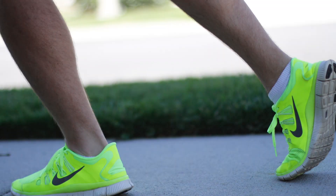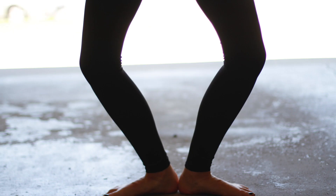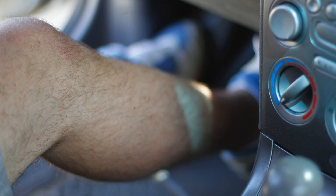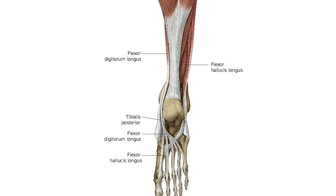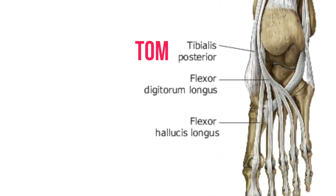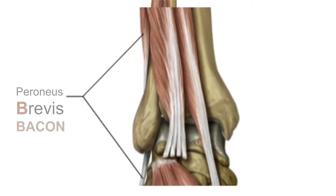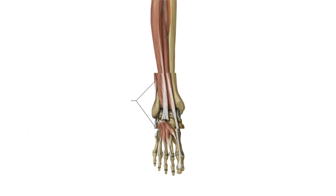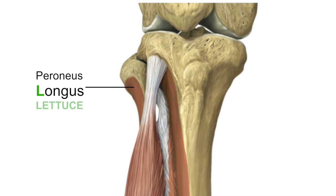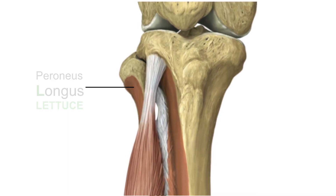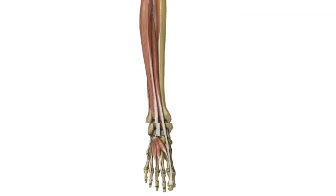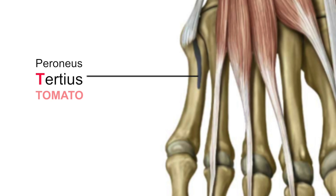Please note the incredible role of the lower leg and foot in facilitating human behaviors. The tibialis posterior is Tom. The flexor digitorum longus is Dick. The flexor hallucis longus is Harry, or Hal. Peroneus brevis is our B for bacon. Peroneus longus is our L for lettuce. Peroneus tertius is our T for tomato.